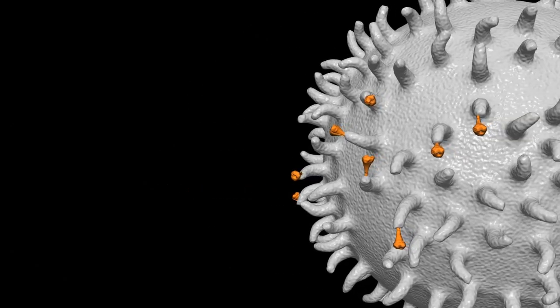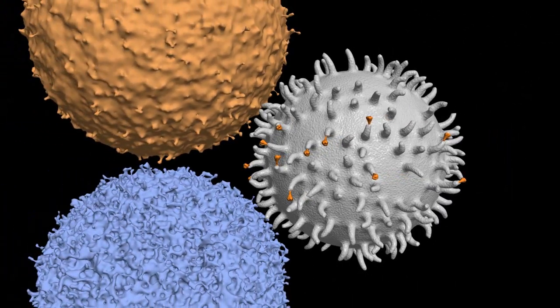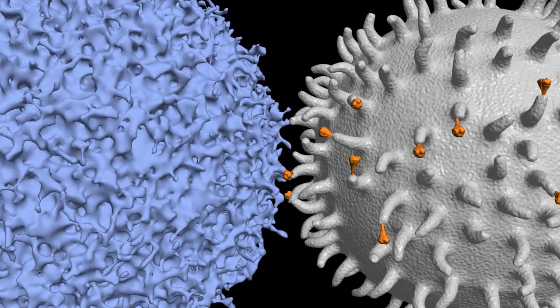Remember, since the genetic sequence solely encodes for the spike protein, only spike B cells, plasma cells, and antibodies will be produced with the current mRNA vaccine.